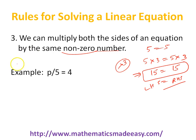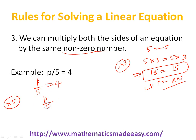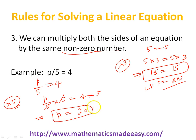Let's take an example. The equation is p by 5 equal to 4, and I need to find the value of p because p is the variable. If I multiply by 5 on both sides: p by 5 times 5 equal to 4 times 5. The 5s cancel, so p equal to 4 times 5 which is 20. So p equal to 20 is the solution of this particular linear equation. We applied the rule that we can multiply by any non-zero number on both sides, and the equation doesn't change.